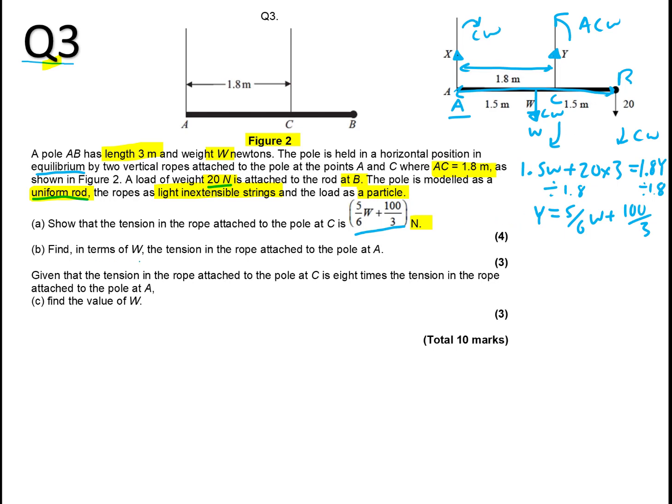Part B. Find in terms of W, the tension in the rope attached to the pole at A. So, we want this one. So, where would it make sense to take moments? Well, first thing, let's resolve up and down. So, part B, I'm going to write here. We're going to know X plus Y, this and this, is going to equal anything acting downwards. So, what's acting downwards is just W, which is in the middle here, W, and the 20 added here, which you can see. So, X plus Y equals W plus 20.